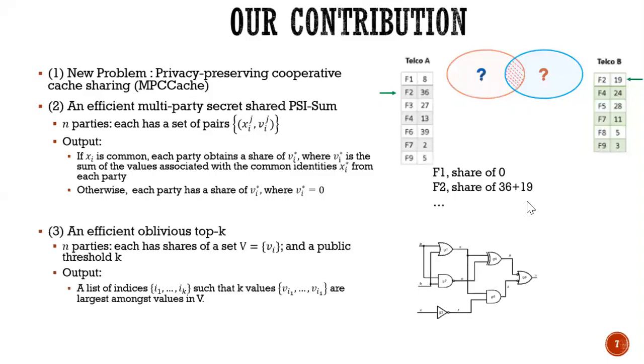And lastly, we propose a version of oblivious top K for small K. And in this setting, we have, again, we have N parties, and each have the share of the values and with the public thresholds K. And the output is K priority values. So you can see that when combined two and three, we have our MPC cache.